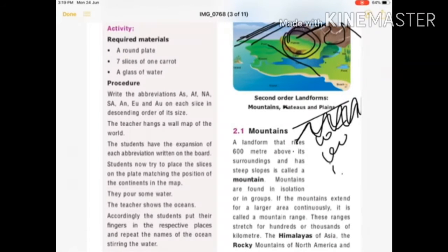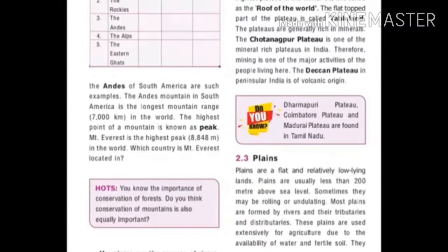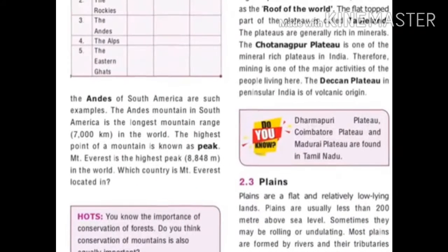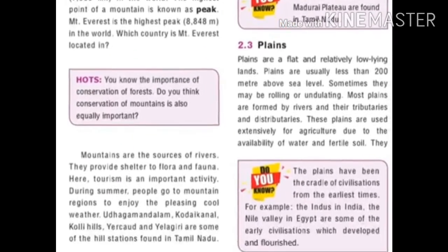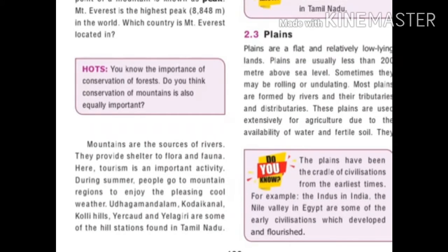The Himalayas of Asia, the Rocky Mountains of North America, and the Andes of South America are examples of mountain ranges. The highest point of a mountain ridge is known as a peak. Mount Everest is the highest peak at 8848 meters, located in Nepal. Mountains are the sources of rivers and provide shelter to flora and fauna.